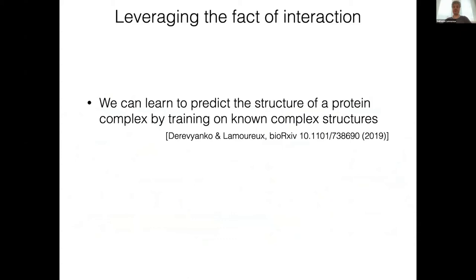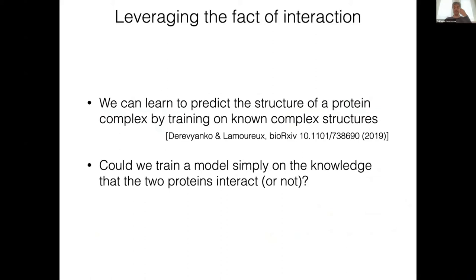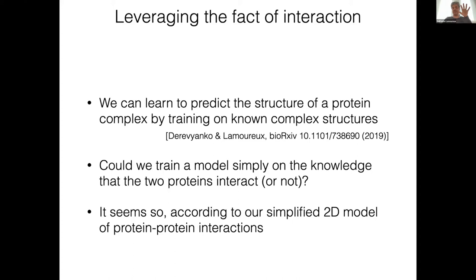The idea here is to use another type of data source to improve the prediction. Can we leverage the mere fact of interaction between two proteins to learn about the structure of that complex? We know we can learn the structure of a protein complex by training on known complex structures. But the question is, can we train a model simply on the knowledge that two proteins interact or not? What I'll show here is our first attempt at answering that question using a simplified two-dimensional model of protein-protein interactions.